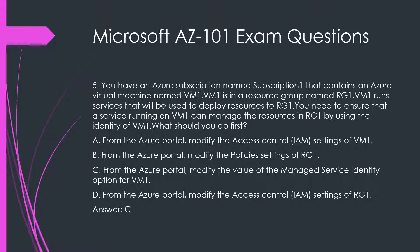A. From the Azure Portal, modify the access control settings of VM1. B. From the Azure Portal, modify the policy settings of RG1. C. From the Azure Portal, modify the value of the managed service identity option for VM1. D. From the Azure Portal, modify the access control settings of RG1. Answer: C.